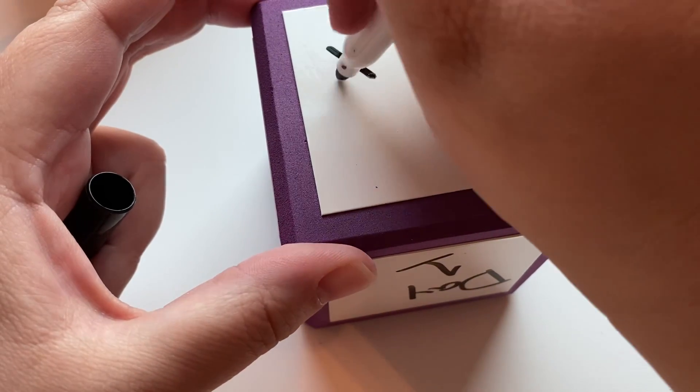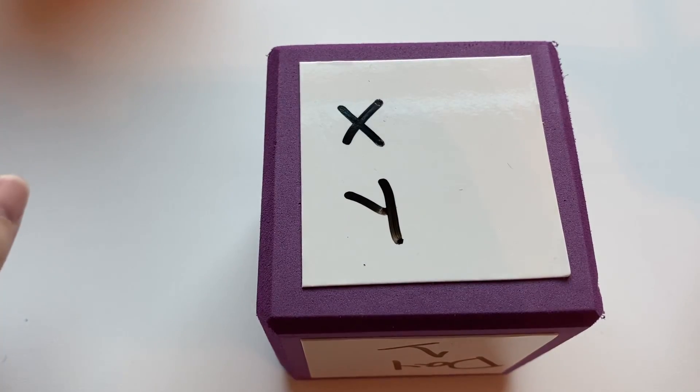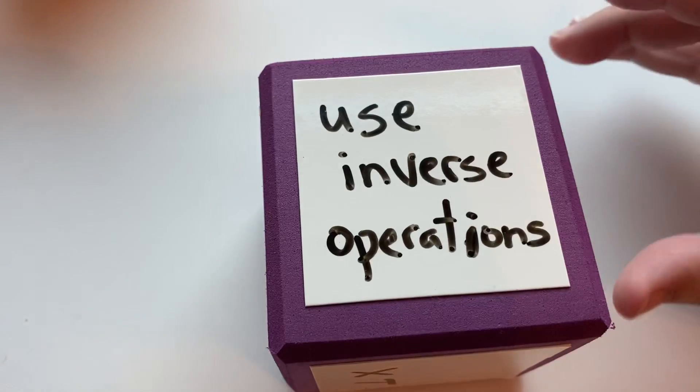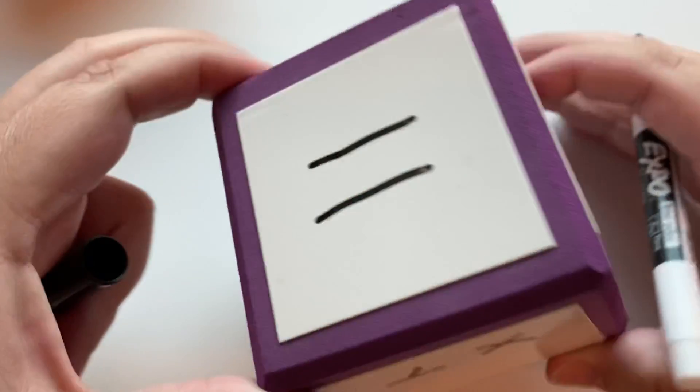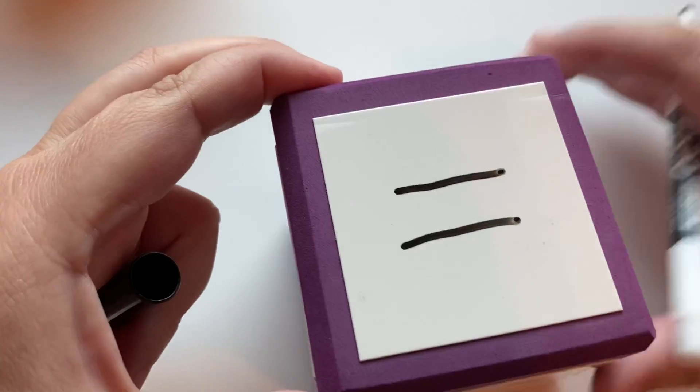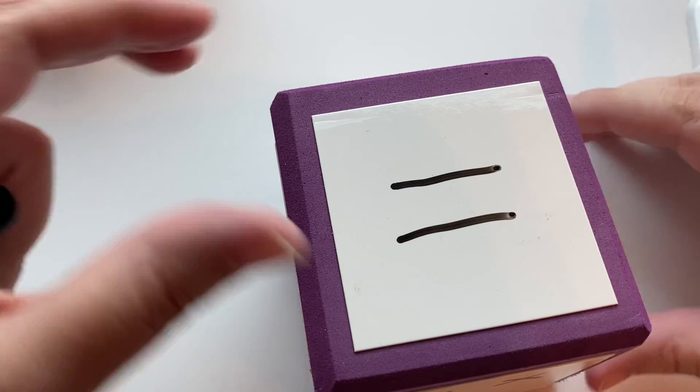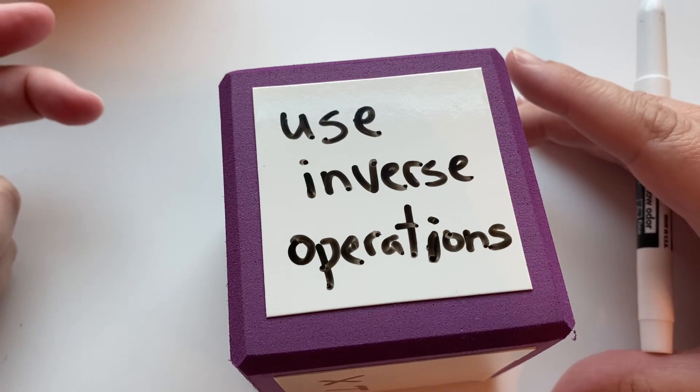We're solving for a variable, and the way that we do that is we use inverse operations. As long as we do the same thing to both sides of our equal sign, they will stay balanced and equal. We've talked about one-step equations before in a previous lesson.